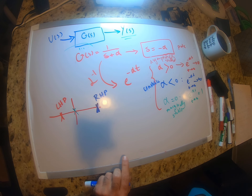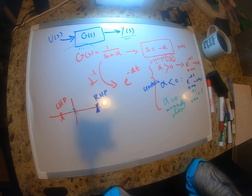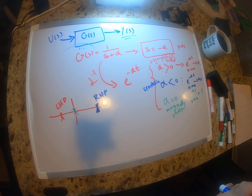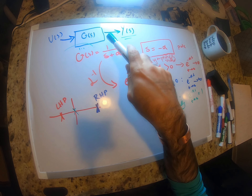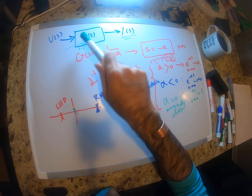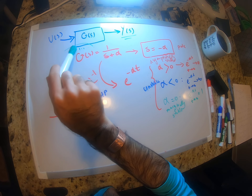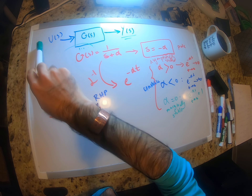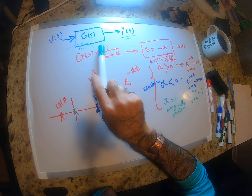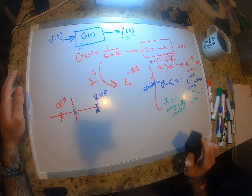The location of poles gives us information about the stability of the system. We can look at the transfer function because it gets multiplied by the Laplace transform of our input. This multiplication shares the same poles — if they don't get cancelled out, the output Y(s) will also be unstable if the transfer function is unstable.